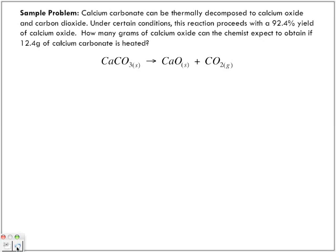Okay, so here we have the last sample problem. Calcium carbonate can be thermally decomposed to calcium oxide and carbon dioxide. Under certain conditions, this reaction proceeds with a 92.4% yield of calcium oxide. How many grams of calcium oxide can the chemist expect to obtain if 12.4 grams of calcium carbonate is heated?